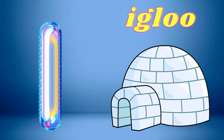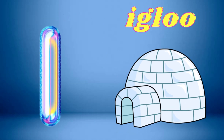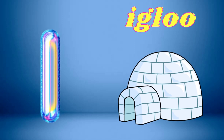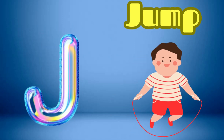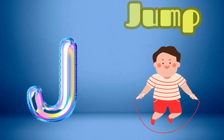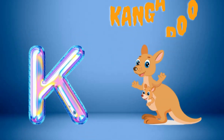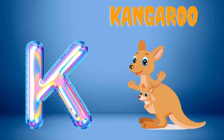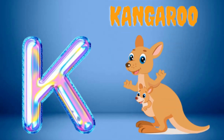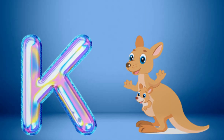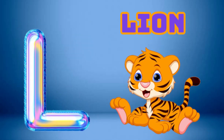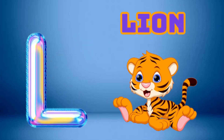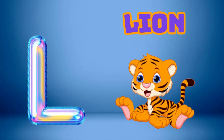I is for Igloo, I-I-Igloo. J is for Jump, J-J-Jump. K is for Kangaroo, K-K-Kangaroo. L is for Lion, L-L-Lion.